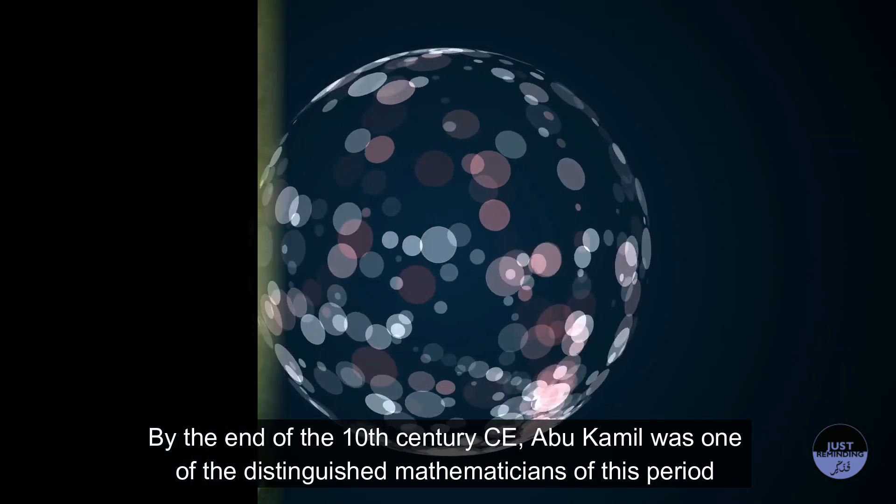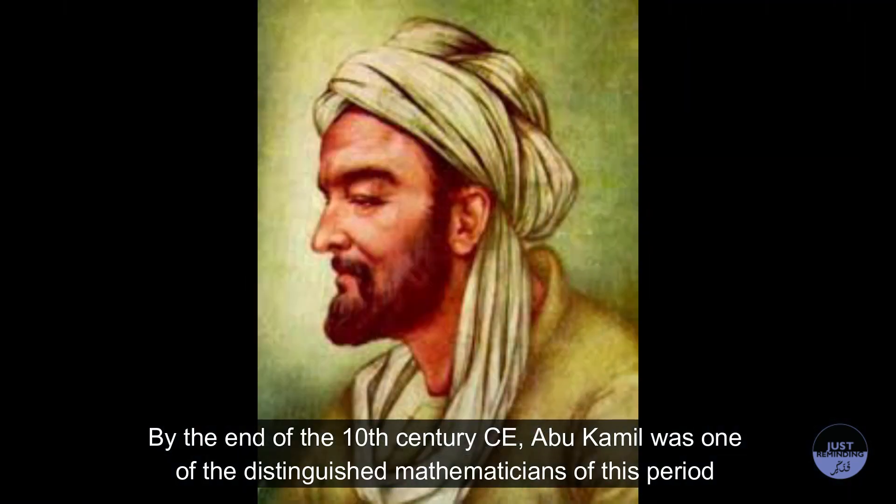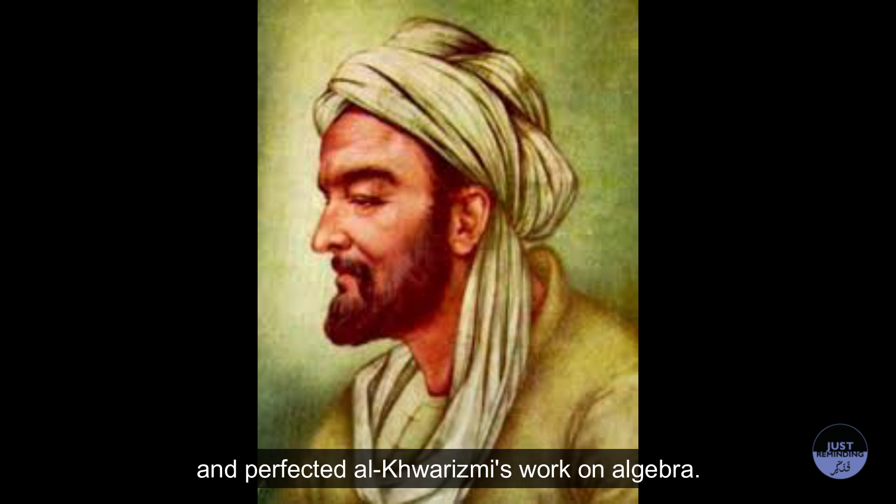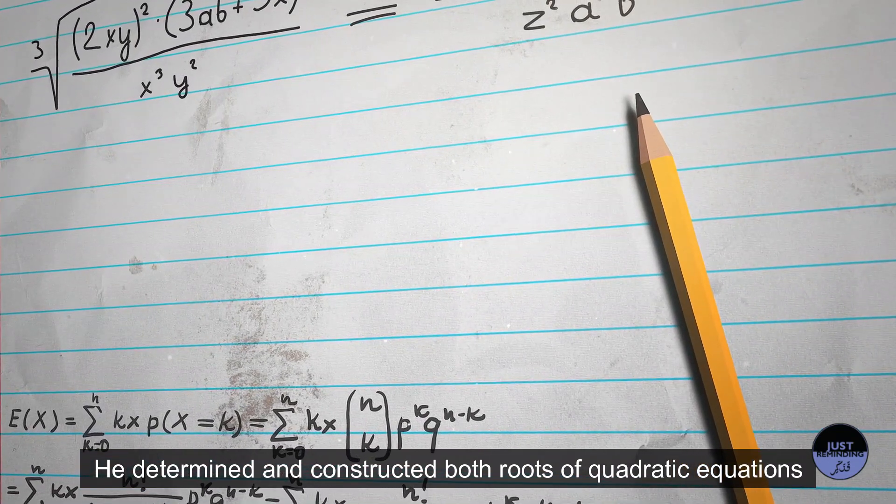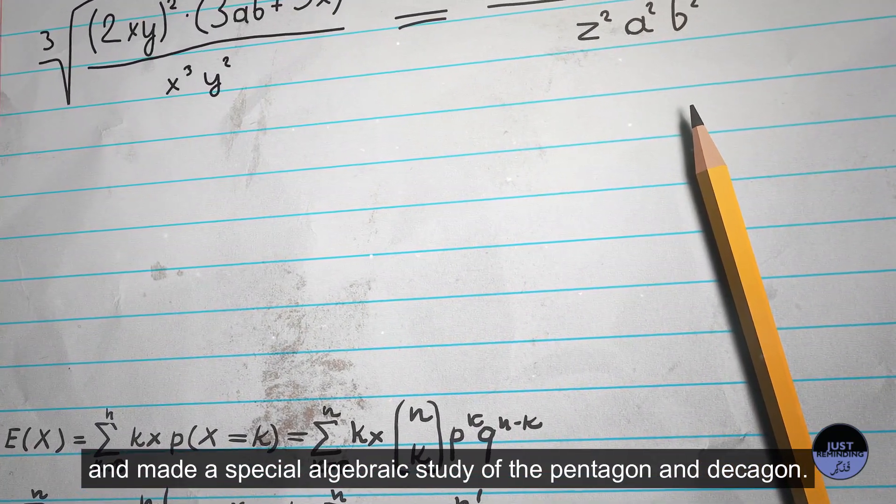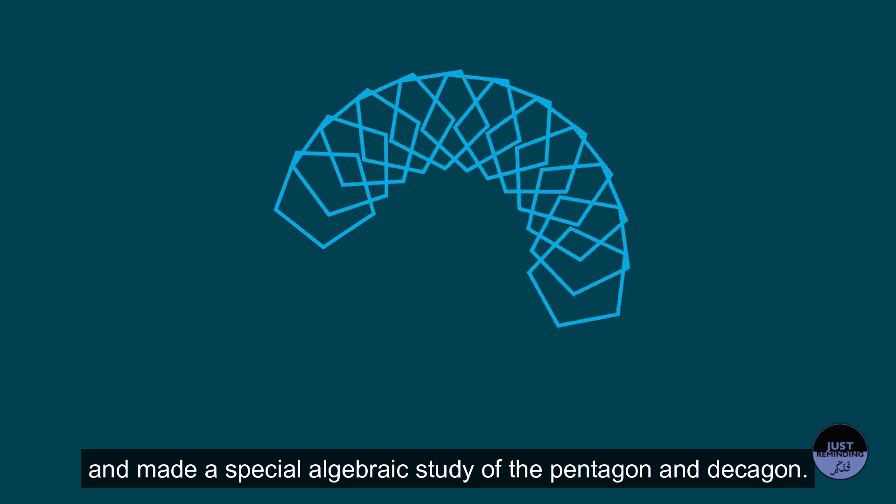By the end of the 10th century CE, Abu Kamil was one of the distinguished mathematicians of this period and perfected Al-Khwarizmi's work on algebra. He determined and constructed both roots of quadratic equations and made a special algebraic study of the pentagon and decagon.